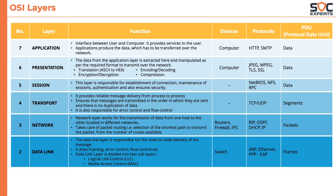Then comes layer 2 — the data link layer — which is responsible for node-to-node delivery of messages. It does framing, error control, and flow control. The data link layer is divided into two sub-layers called logical link control and media access control. Switches work at layer 2. Protocols include ARP, Ethernet, PPP, EAP, etc. The data is in the form of frames.